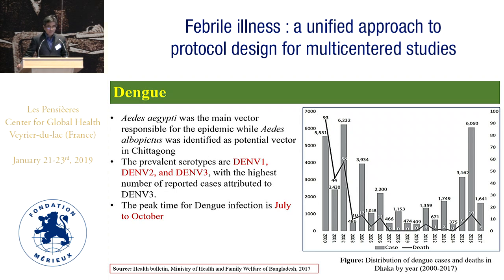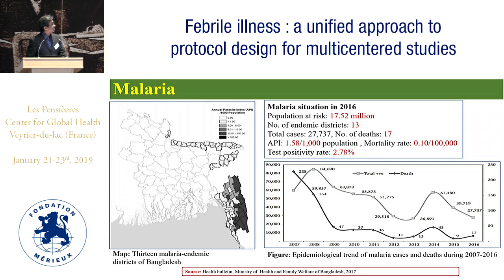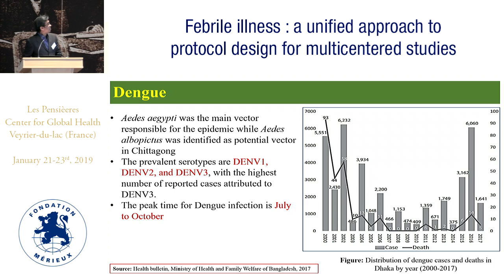Now about dengue: like other countries, Aedes aegypti was the main vector for epidemic transmission. However, Aedes albopictus has also been identified as a potential vector in parts of the country. The prevalent serotypes circulating include dengue virus 1, dengue virus 2, and dengue virus 3. However, the highest number of reported cases have been attributed to dengue virus 3.